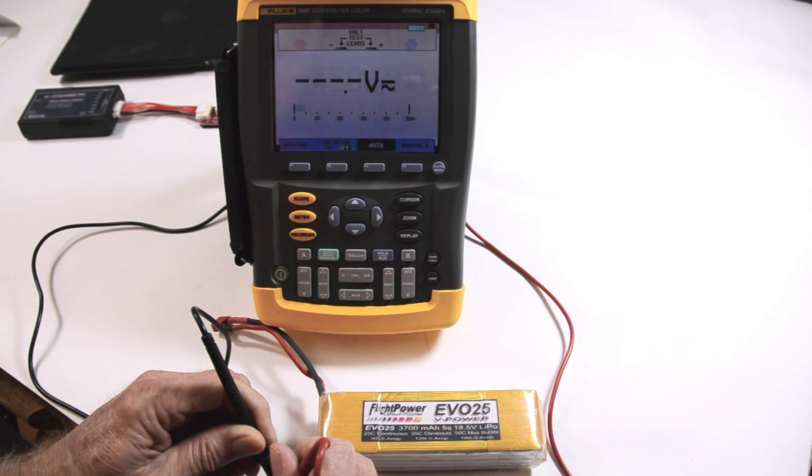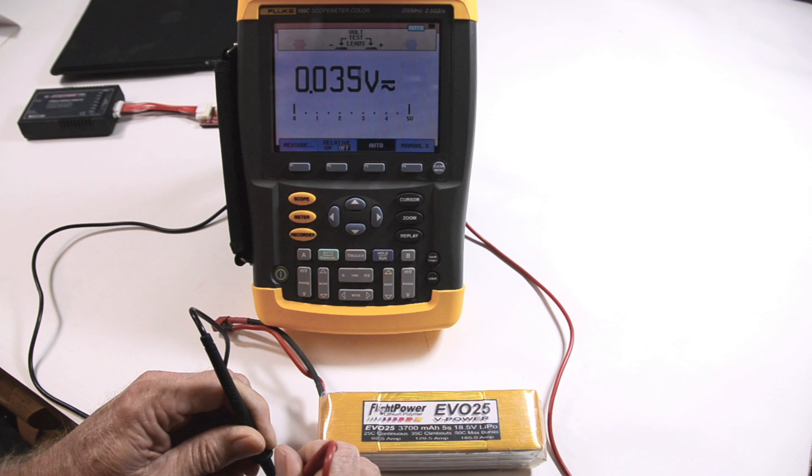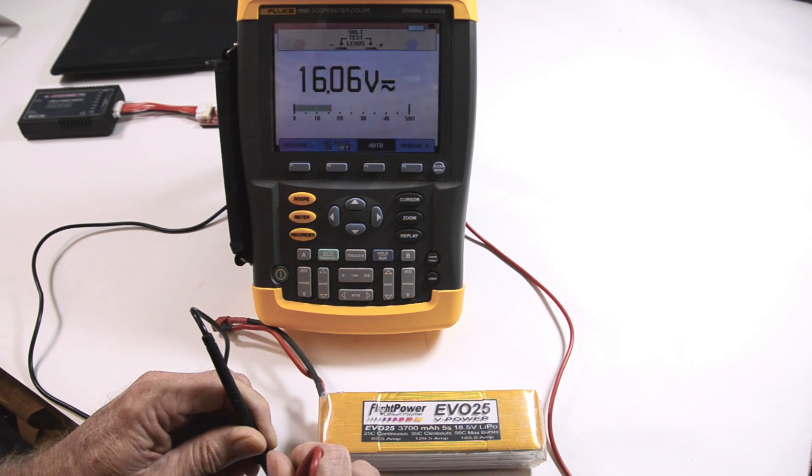And the third cell is like 4.03 volts and the fourth cell is 4.03 volts and the fifth cell is 3.96 volts.